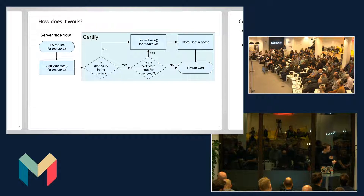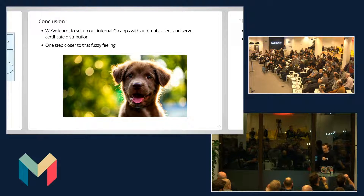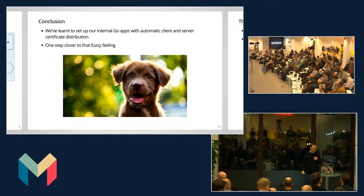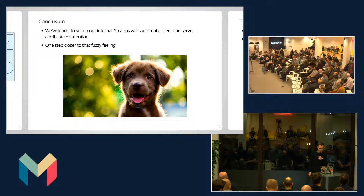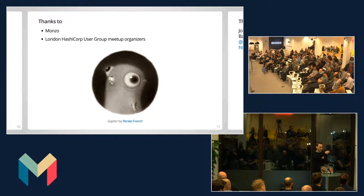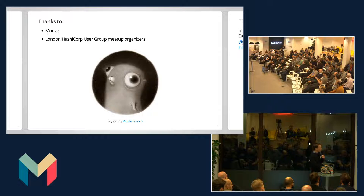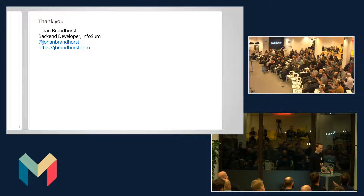And that basically is it. So let's just quickly reflect on what we learned. We learned to set up our internal Go apps with automatic client and server certificate distribution, and we're one step closer to having that fuzzy feeling in our TLS deployment. I'd just like to give a quick thanks to Monso for hosting us and to the London HashiCorp User Group meetup organizers — that's Marcello mostly. It takes a lot of effort to host these meetups, so thanks Marcello. Thank you for listening.